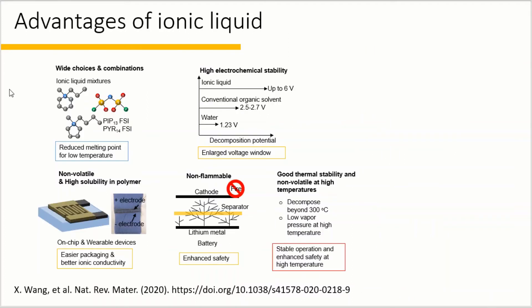Why are ionic liquids promising electrolytes of choice for electrochemical energy storage applications? First, ionic liquids can be mixed together to form eutectic phases, or the cation and ion pairs can be designed to have different asymmetry or altered ionic interactions to control the physicochemical and electrochemical properties of the electrolyte. Second, ionic liquids exhibit superior electrochemical stability compared with organic electrolytes and aqueous electrolytes. This enables ionic liquid-based energy storage devices to be stably operated within a large electrochemical potential window up to 6 volts in some cases, which in turn provides a high energy density.